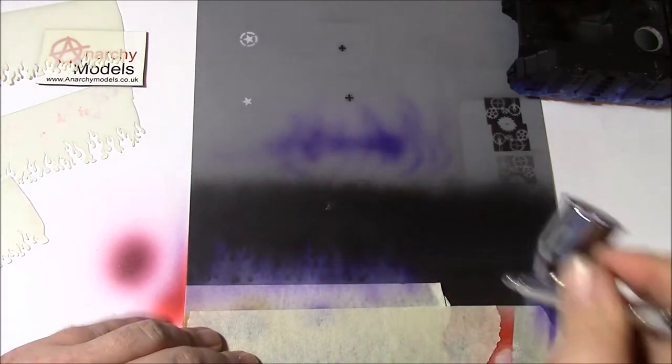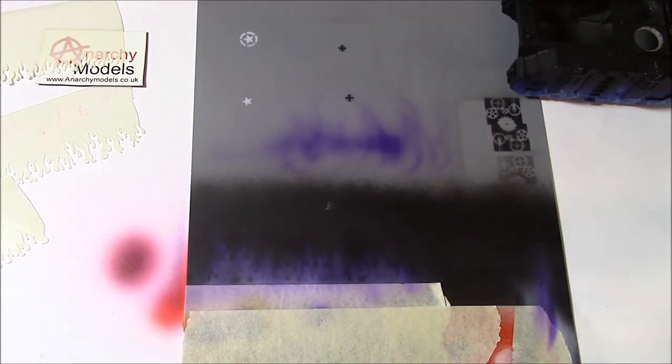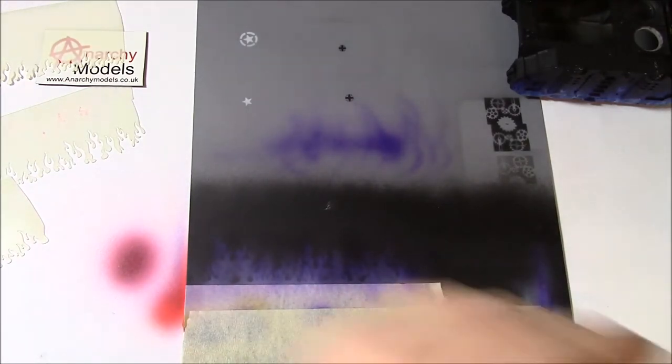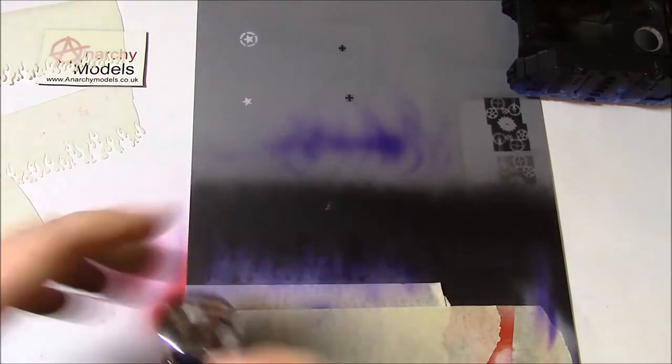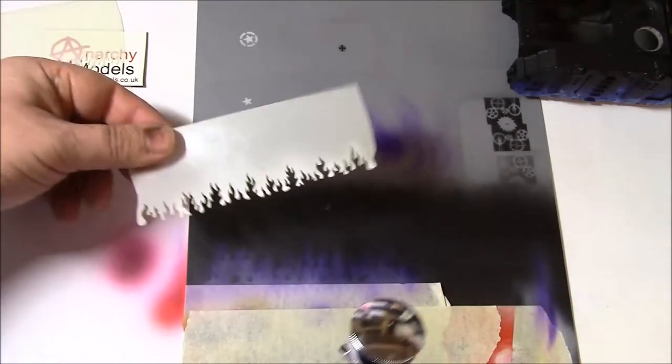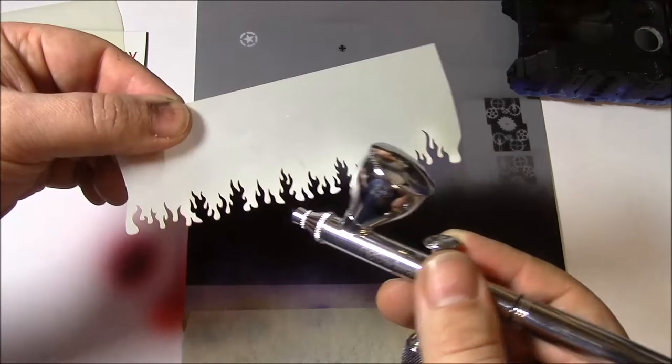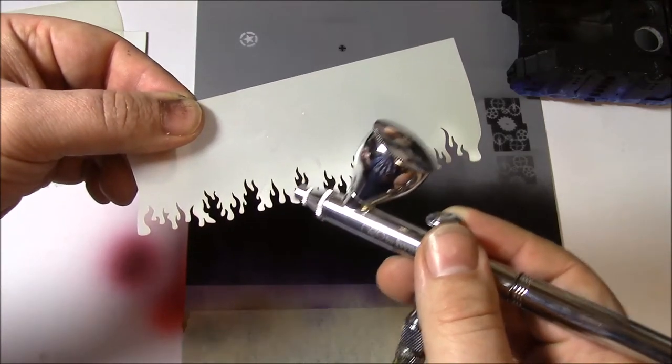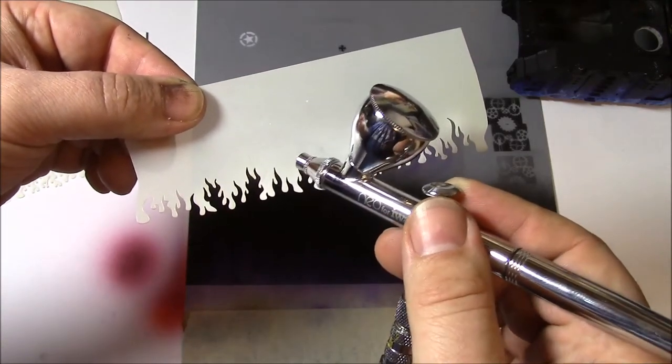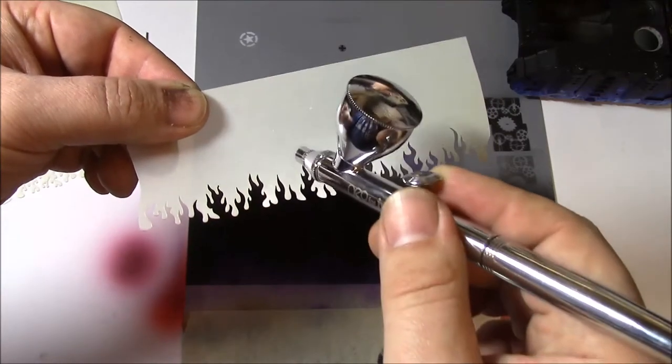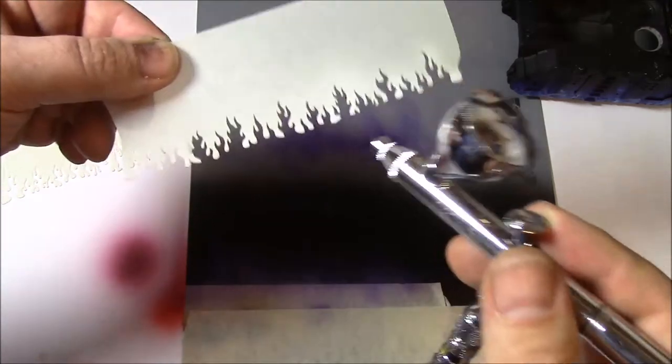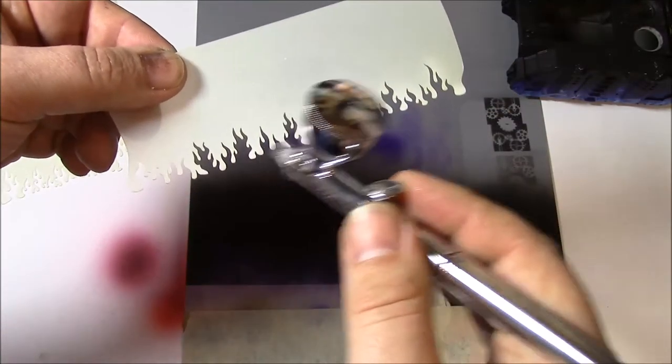I think that will do. So now I'm going to go back to the white again, and we're going to start adding a bit more definition. We want to concentrate the paint around some of these loops here and to really accentuate the points. If these end up really bright, the flames are the wrong way around—the bottom should be the brightest part.